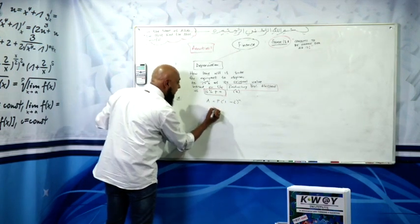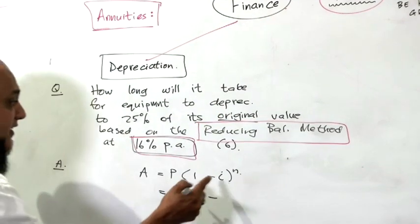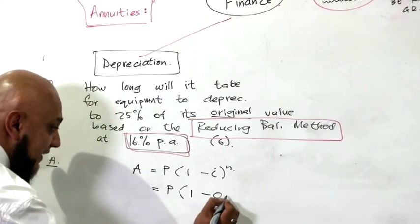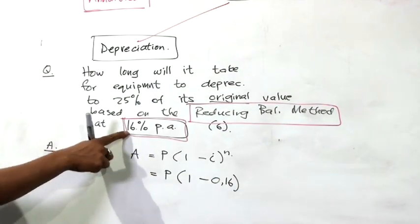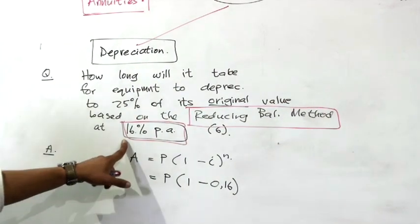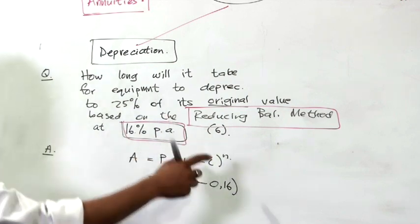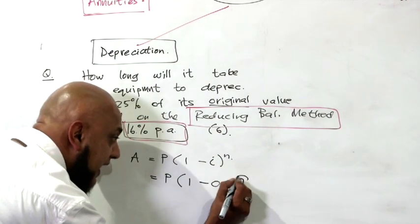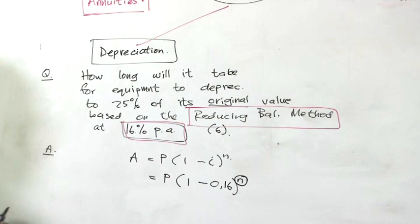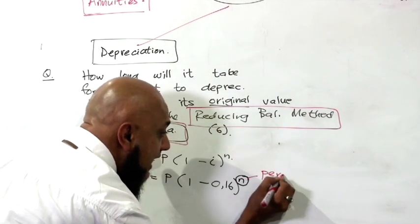That's our principal value, our original value, 1 minus, what have they given me, the i, 0.16. I always told you your percentage must be put as a decimal. So 16% would be 0.16, 16 over 100, to the power n. That's what we need to find. How long? We are looking for the period. n represents the period.